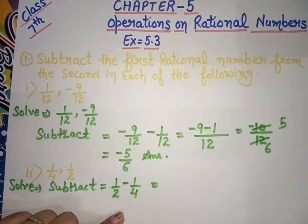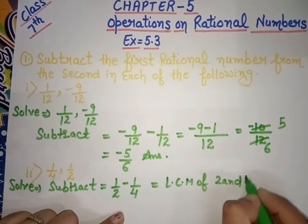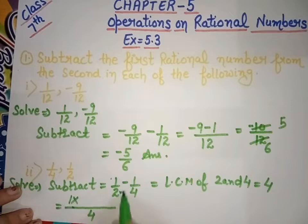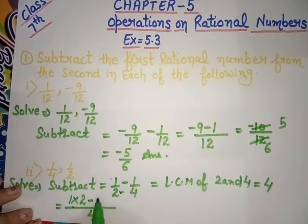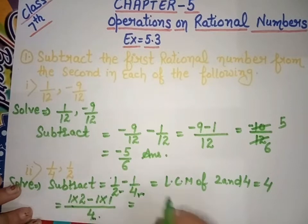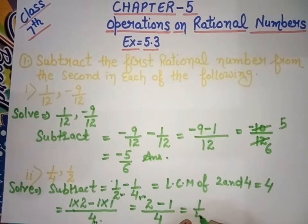Since denominators are different — 4 and 2 — we take LCM. LCM of 2 and 4 equals 4. So the denominator becomes 4. For the first term, numerator is 1; divide LCM 4 by denominator 2, we get 2; multiply by numerator 1 to get 2. For the second term, numerator is 1; divide LCM 4 by denominator 4, we get 1; multiply by 1 to get 1. So we get: 2 minus 1, over 4. That equals 1 over 4. Answer: 1 over 4.